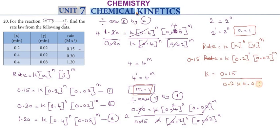k equals 0.15 divided by 0.2 times 0.02, which equals 0.15 divided by 0.004. Multiplying by 1000 to simplify, we get 150 divided by 4, which equals 37.5. So k equals 37.5 mole per liter per second. This is the answer.